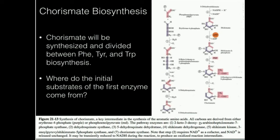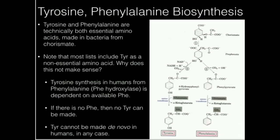Histidine is going to be made in a completely different manner. Now we're going to go into tyrosine and phenylalanine biosynthesis, which follows from chorismate synthesis. In the next video we'll go over tryptophan. For tyrosine and phenylalanine, notice we start with chorismate.